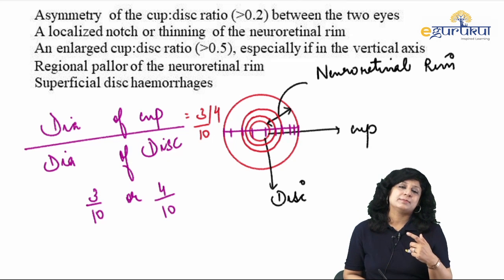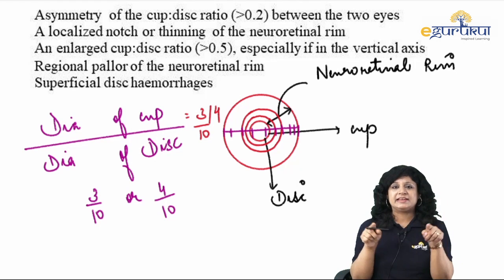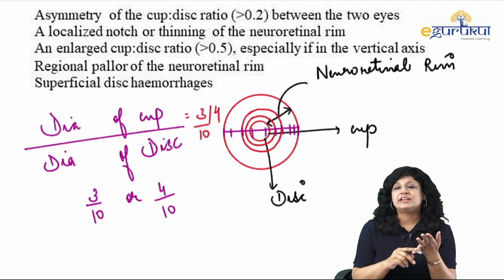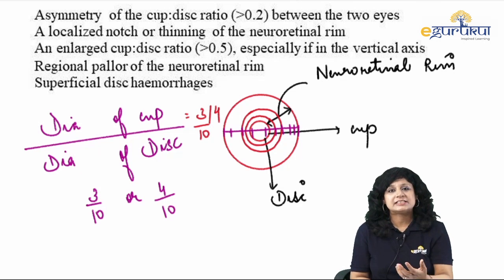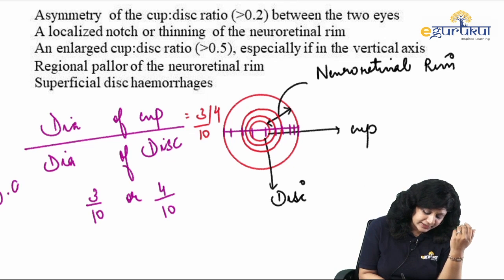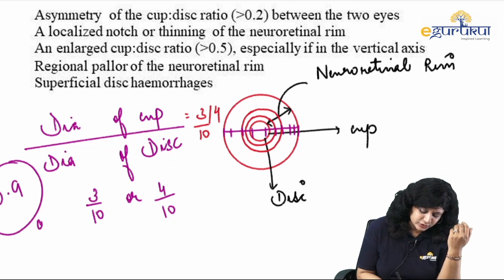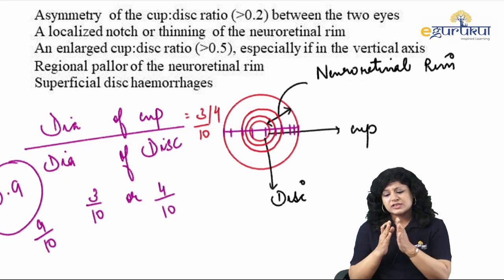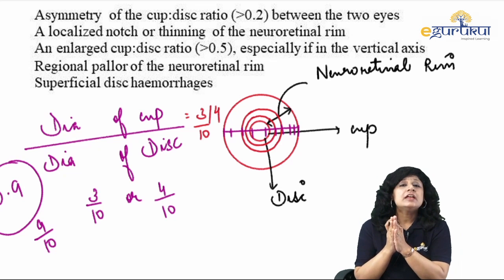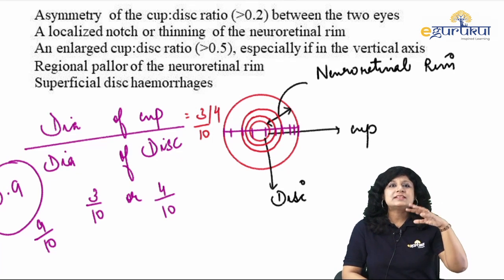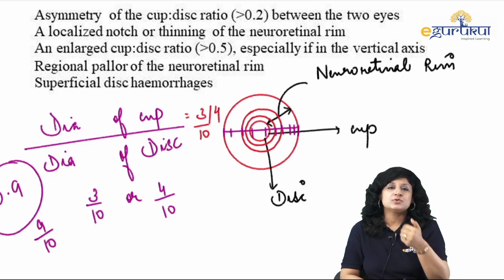When optic nerve fiber atrophy occurs, the hollow increases — it can occupy 5, 6, or 7 parts. My CD ratio will now be 0.5, 0.6, 0.7, 0.8, or 0.9. A CD ratio of 0.9 means 9 out of 10 parts — this is near total optic atrophy. When the whole optic nerve atrophy has taken place, that is 10 by 10 — total optic atrophy.